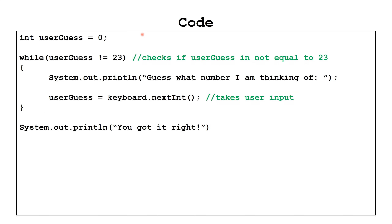Let's look at a piece of code where it makes more sense to use a while loop. Here, we are having the user guess the value of a secret number — in this case 23 — and they'll have to keep guessing until they get the right answer. We initialize userGuess equal to zero. While userGuess is not equal to the secret number 23, the loop will continue executing. Inside the body, it asks the user to guess, takes input into the userGuess variable, and loops back. When userGuess equals 23, the loop terminates and prints: you got it right.